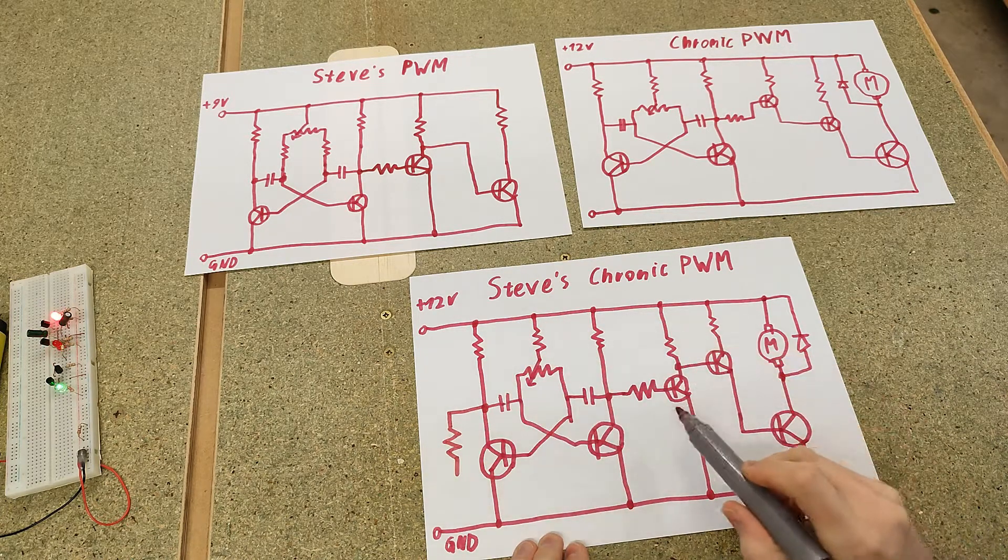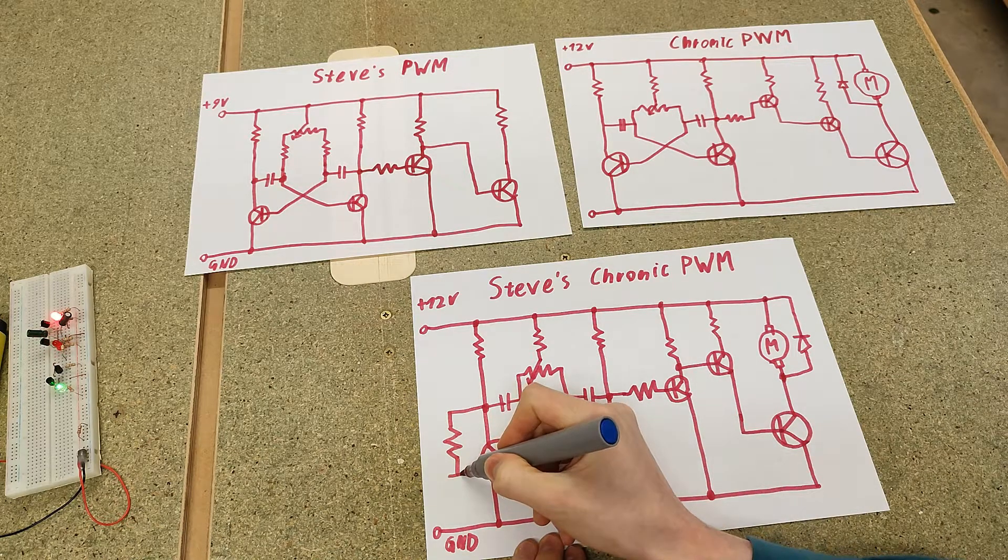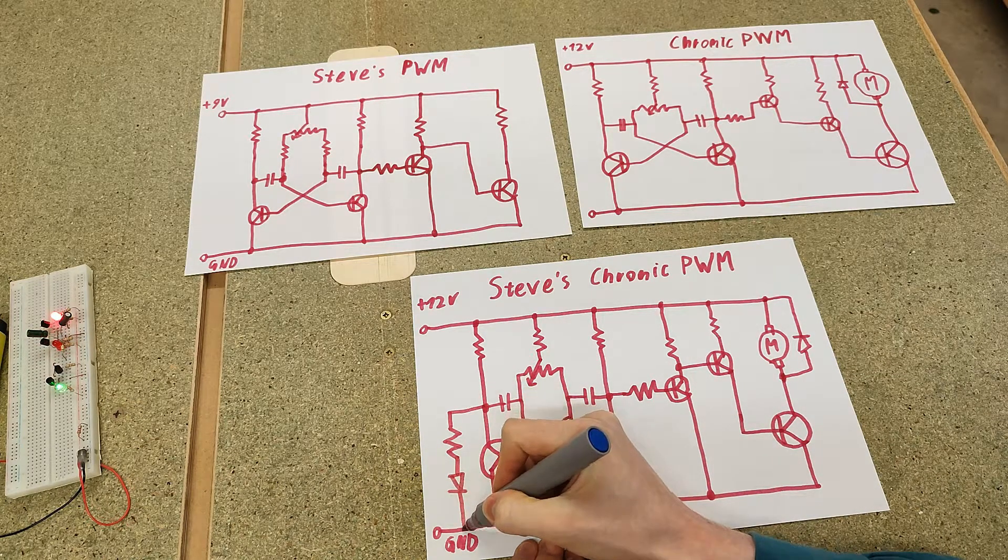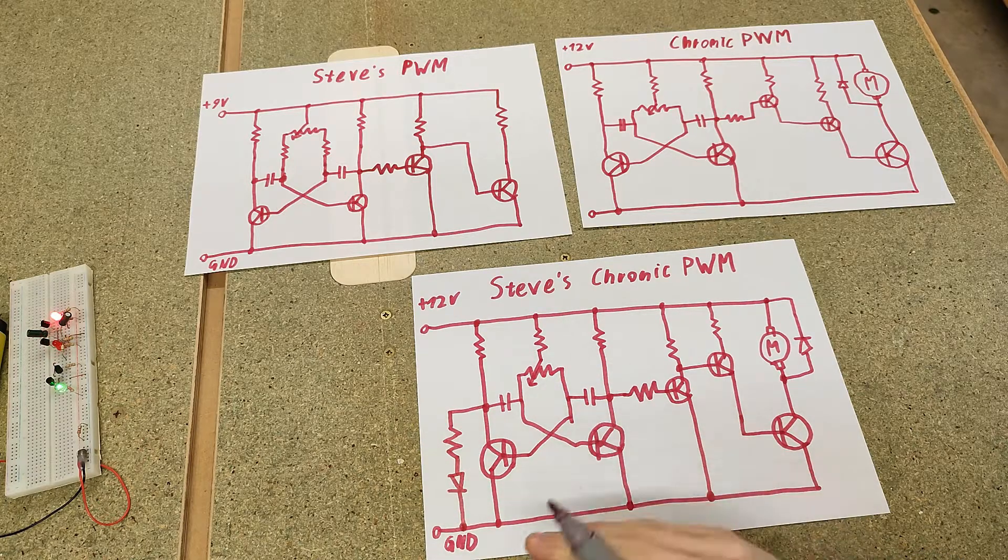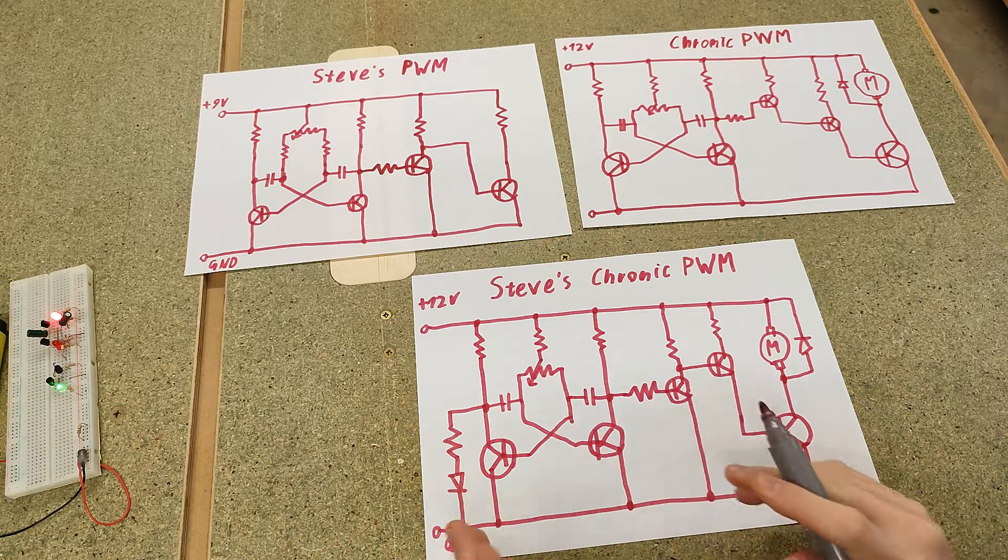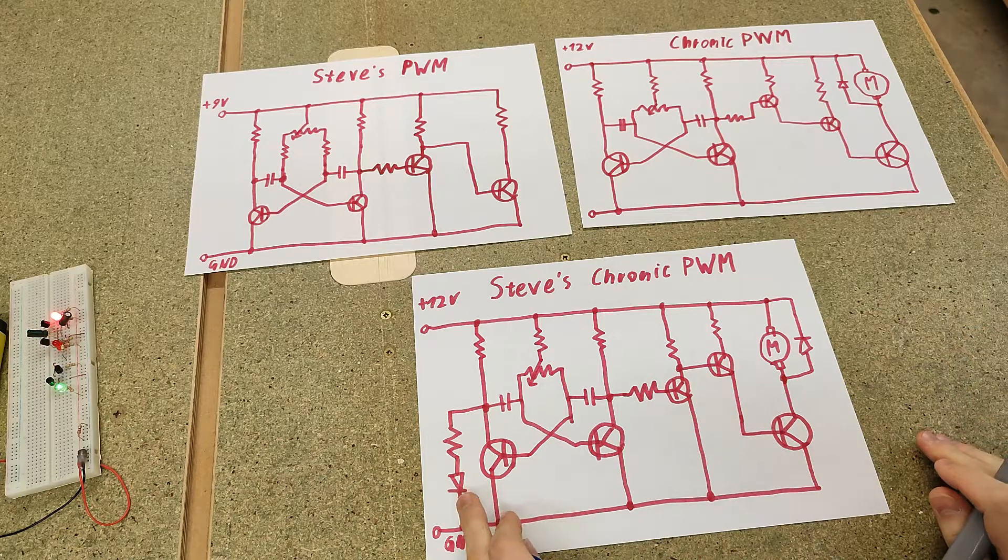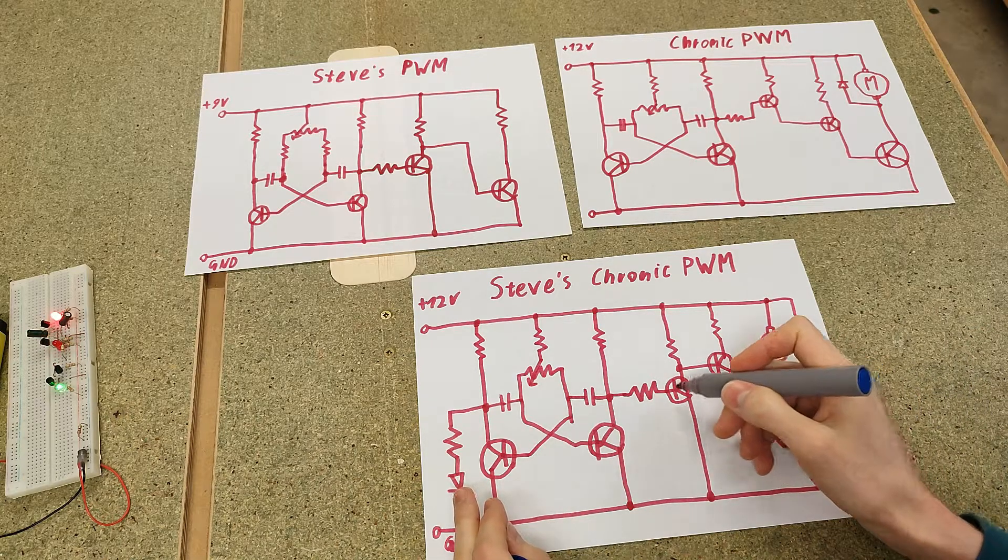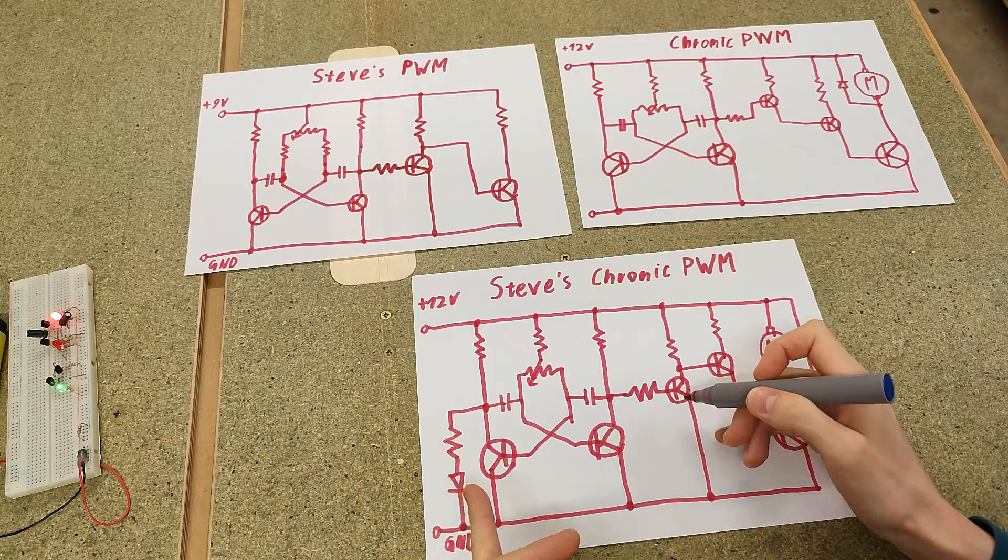And to replace the junction of this transistor, we can simply go ahead and put a tiny little diode down here. Just use the lowest current diode you can find, anything is going to work. It's just to get this 0.7 volt threshold voltage here as well.